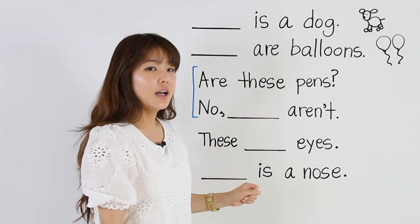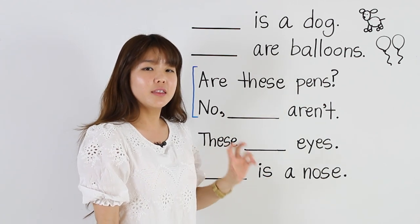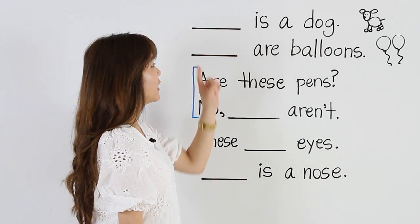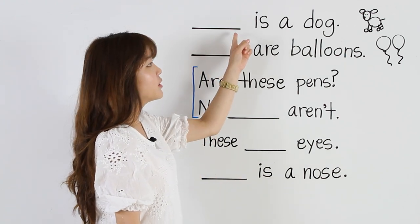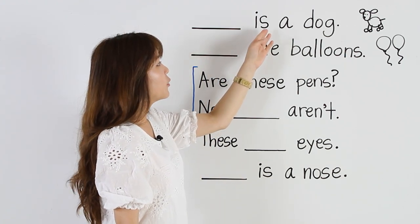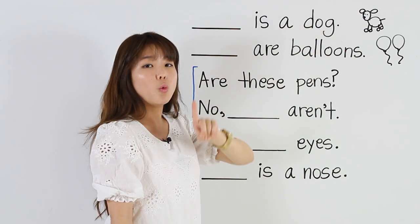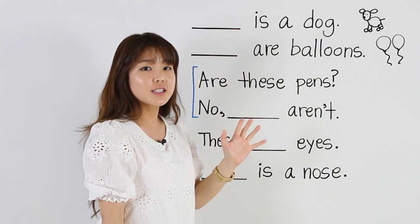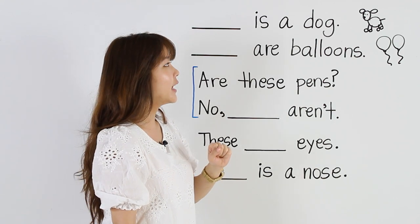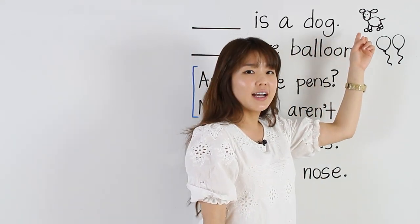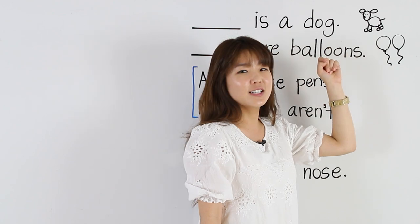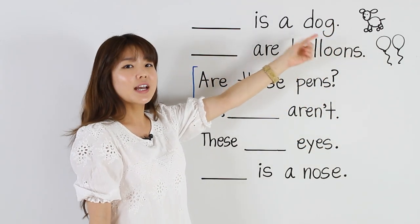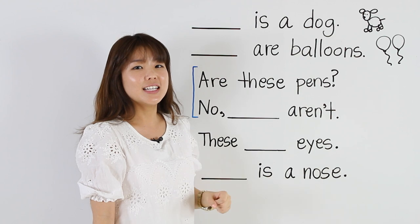Now here, I want you to focus on this, that, these, and those. So here's the first example. We have a dog — one dog. So we have to use 'this' or 'that'. If it's close, I say, 'This is a dog.' If it's far away, I say, 'That is a dog.'